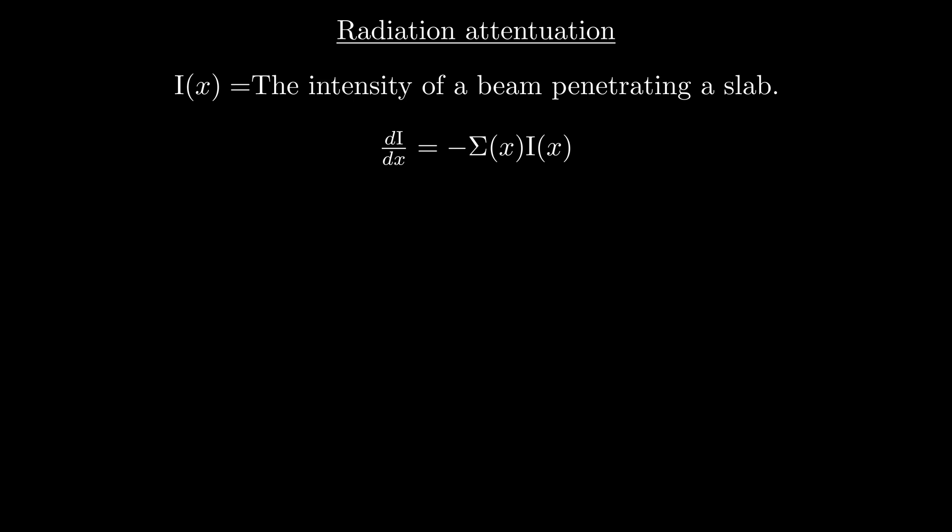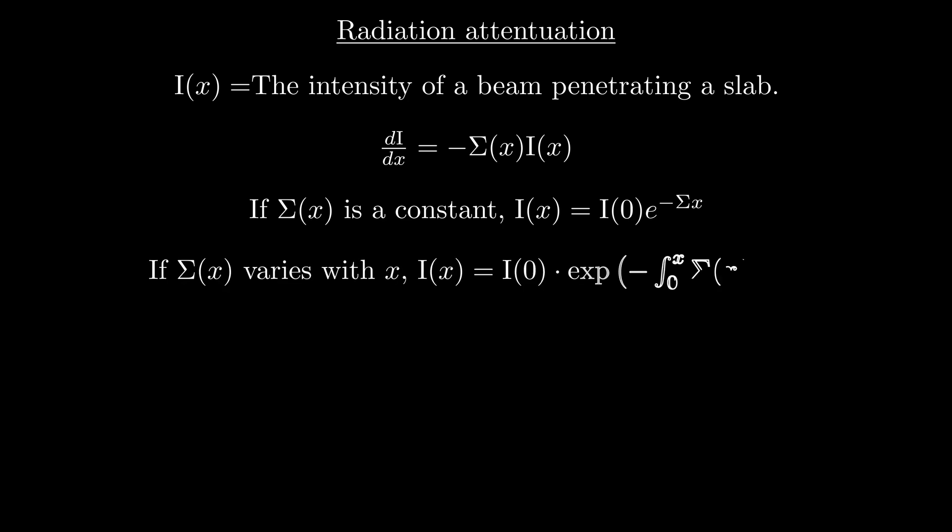Remember that sigma is the probability per length of an interaction occurring, so if we integrate this expression from 0 to x, we'll get an expression for the intensity of the beam which has not undergone any interactions up to x. This comes out to i of x equals i of 0 times e to the negative sigma x, where i of 0 is the initial intensity of the beam at the surface of the slab. So while the probability that we have an interaction here is constant from point to point, the amount of beam which penetrates the slab up to some point x falls off exponentially. If our slab's material changes with position so that sigma is actually also dependent on x, we can generalize our formula as follows.